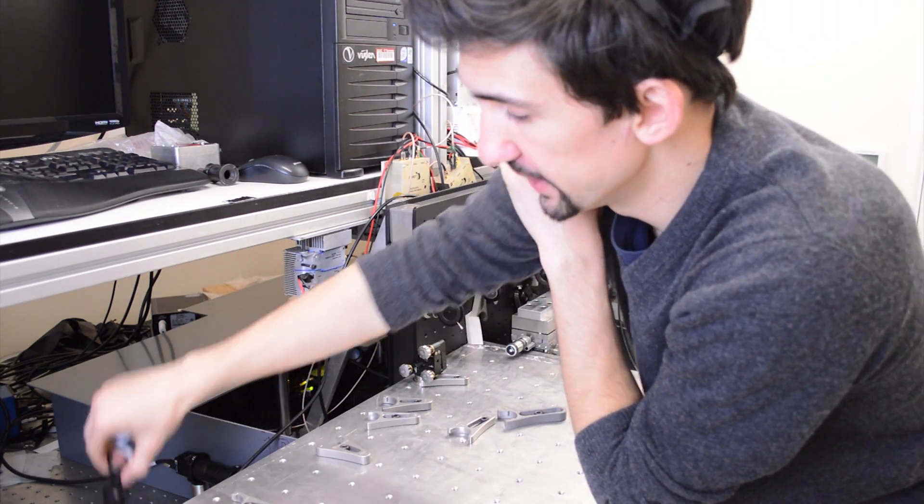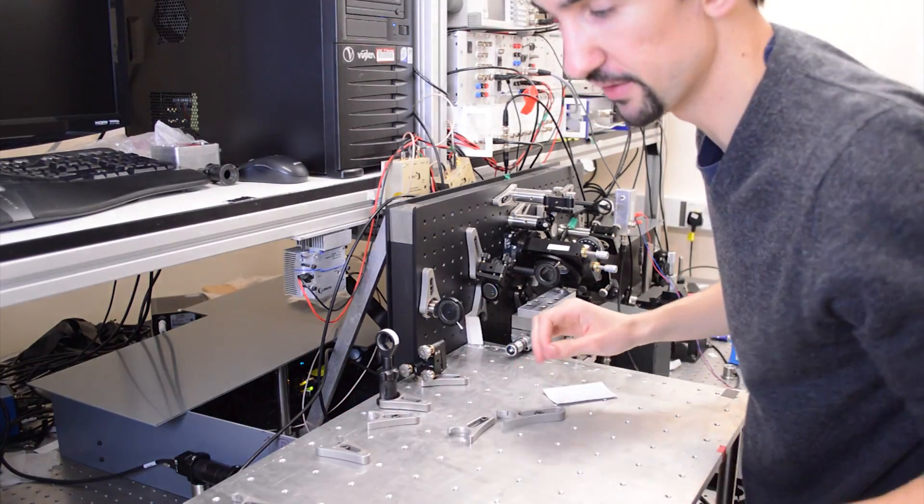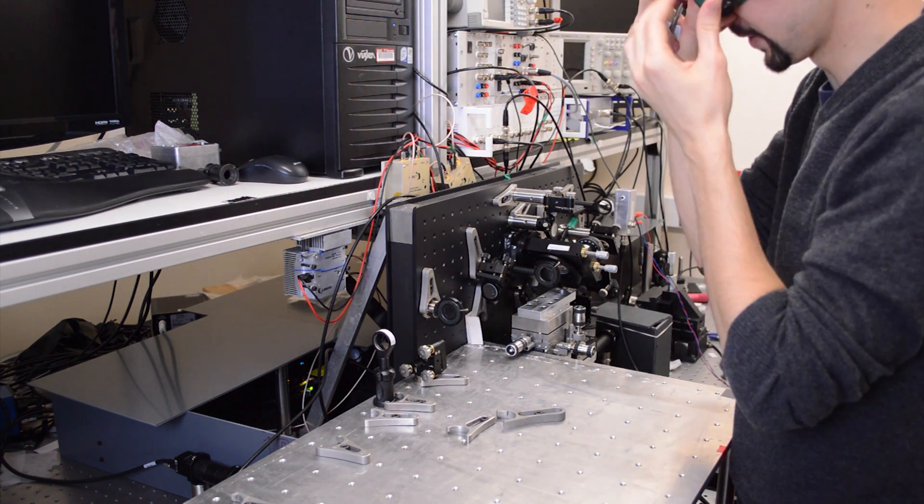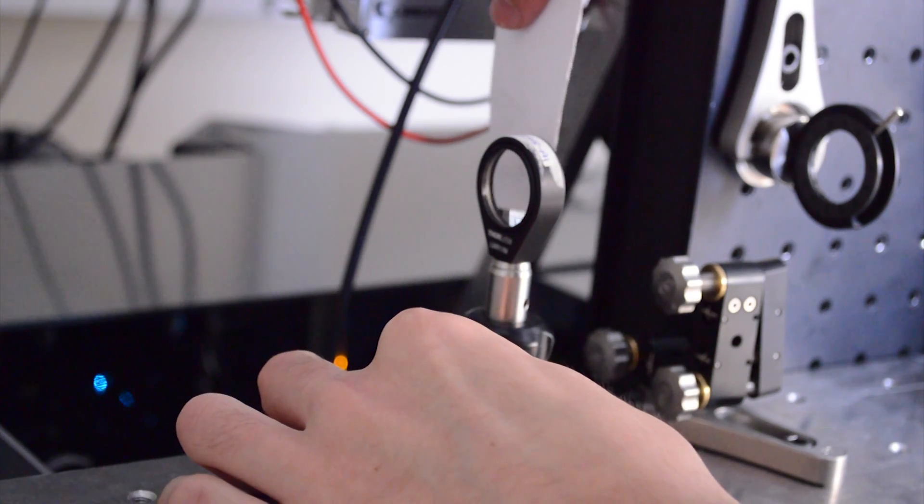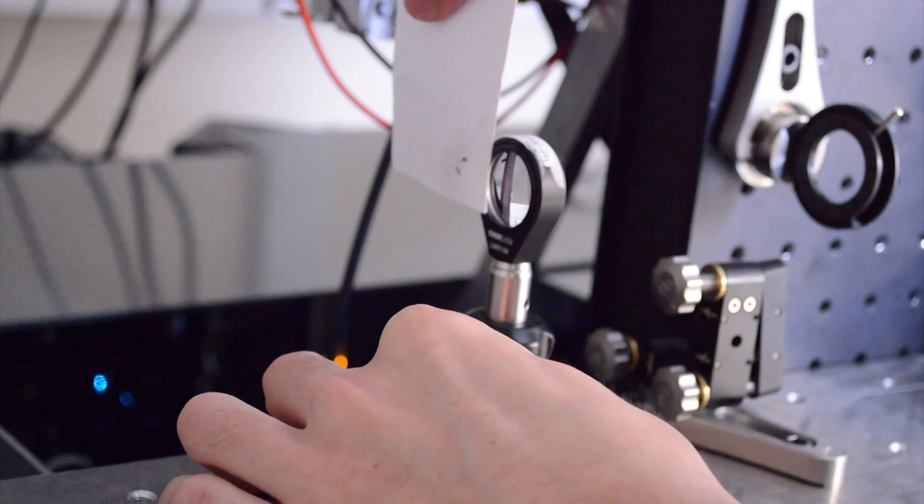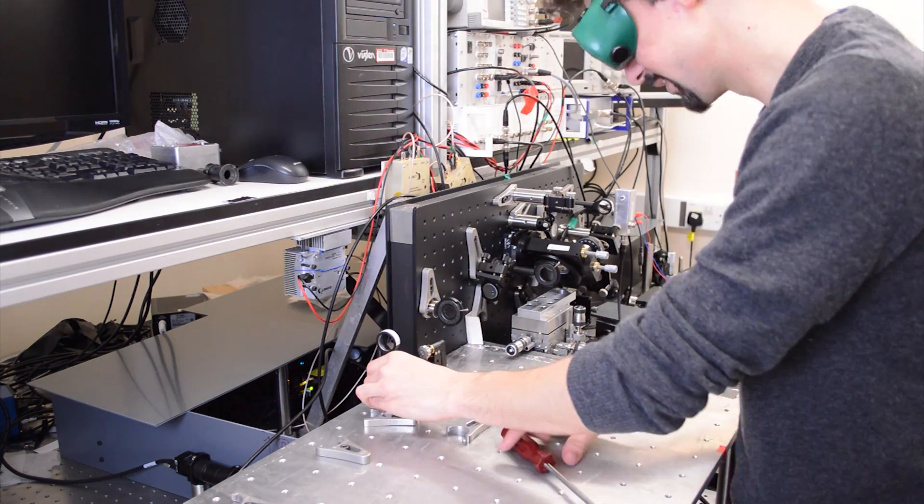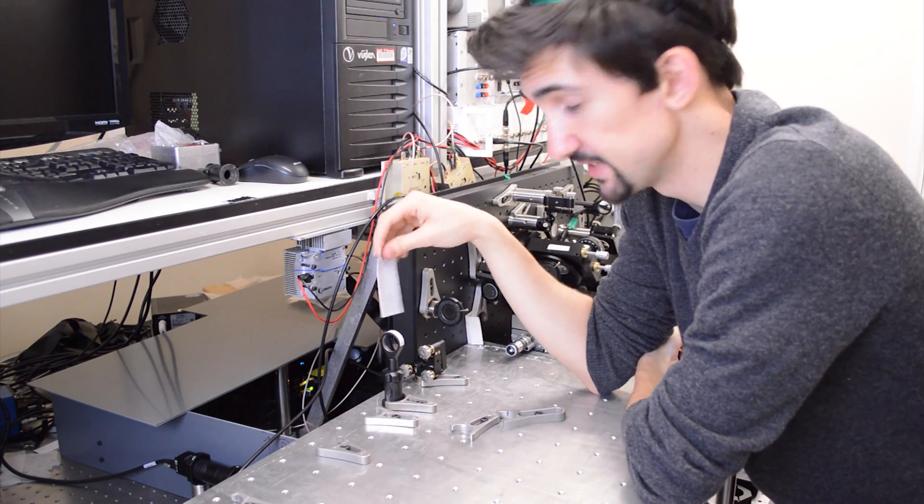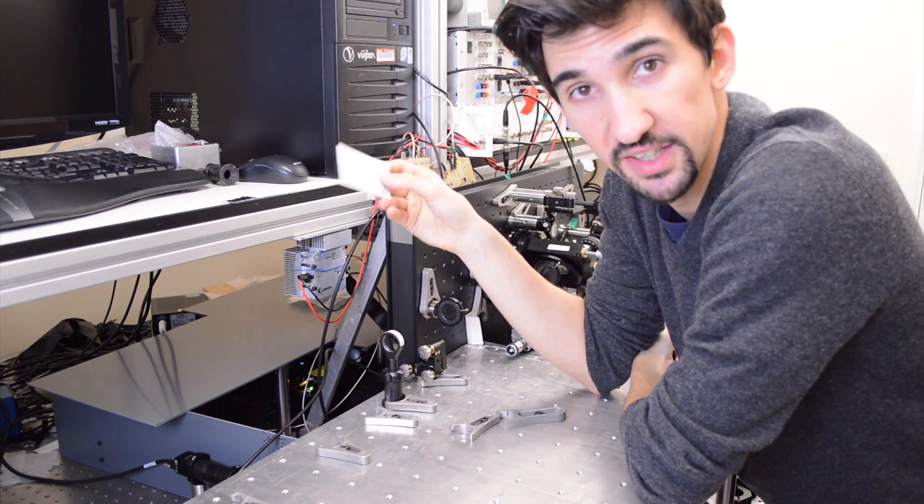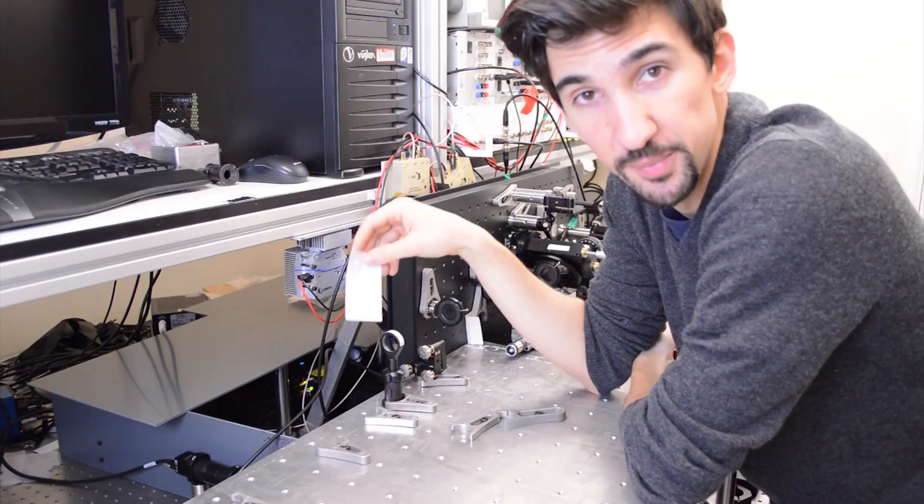So the first thing to do obviously is the core component of what we want to do, which is focus the laser so that we take the transform of the intensity profile. So for that obviously just what we need is a lens. This one's about 75mm focal length and we're going to place that just in the beam's path whilst placing our goggles on because safety. And the important thing to do is make sure that the beam goes through the very centre of the lens, otherwise we get weird aberration effects.